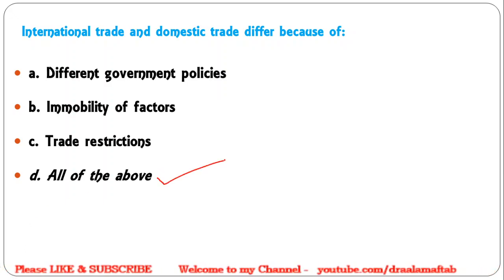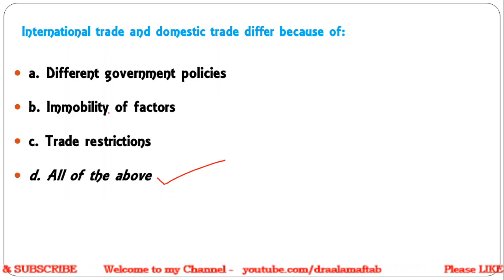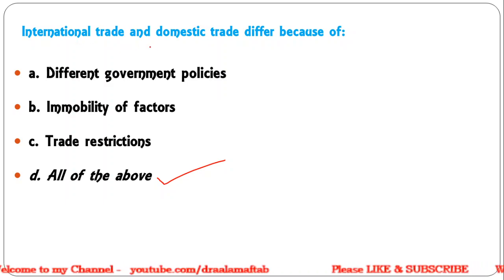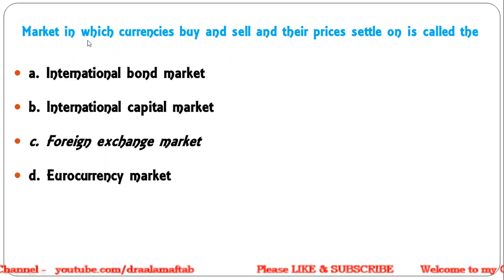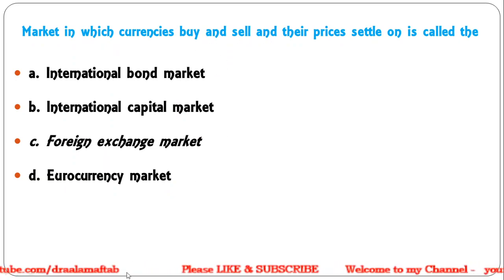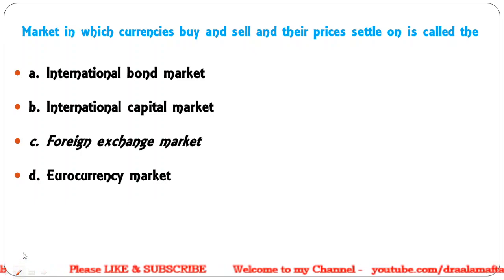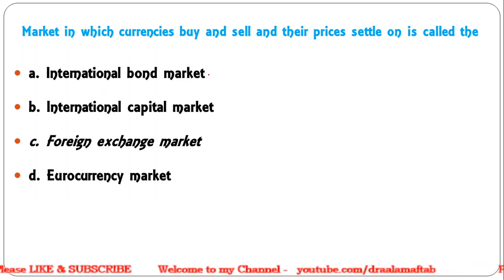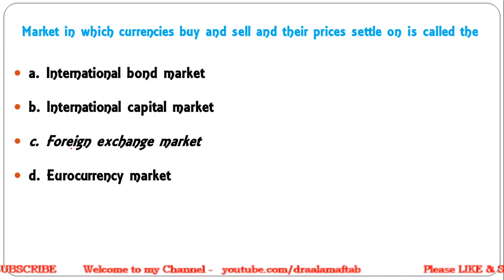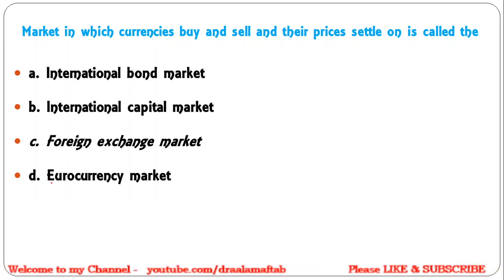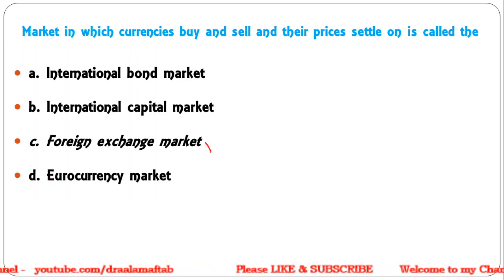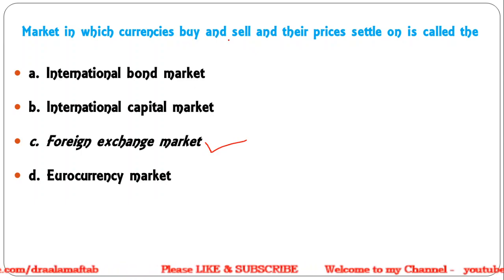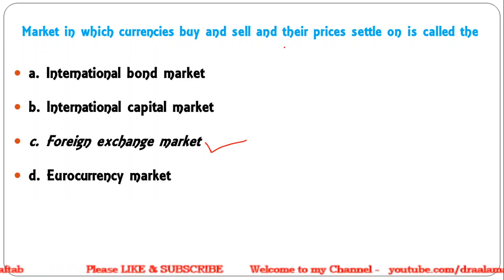Next: The market in which currencies are bought and sold and their prices settled is called — international bond market; international capital market; foreign exchange market; eurocurrency market. Correct answer is the foreign exchange market, where buying and selling of currencies take place and prices are settled.